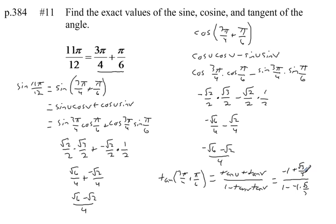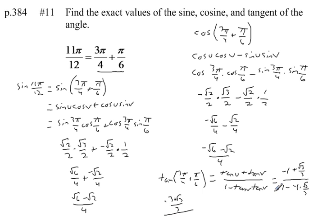So we have (−1 + √3/3) / (1 − (−1)(√3/3)), which is (−1 + √3/3) / (1 + √3/3). Writing the 1's as 3/3 to combine fractions, the numerator becomes (−3 + √3) / 3 and the denominator becomes (3 + √3) / 3. The 3's cancel, leaving (−3 + √3) / (3 + √3).